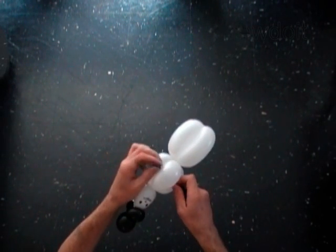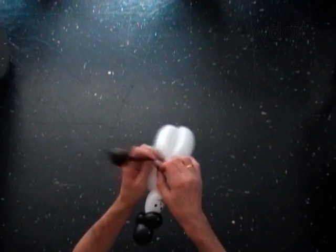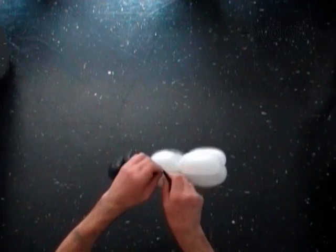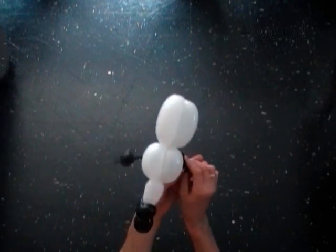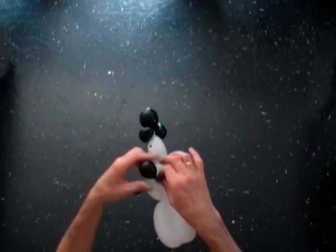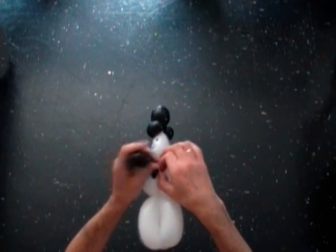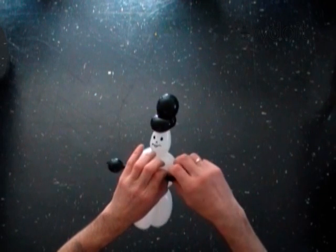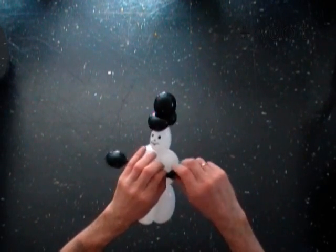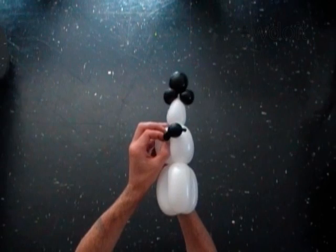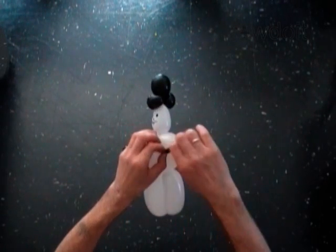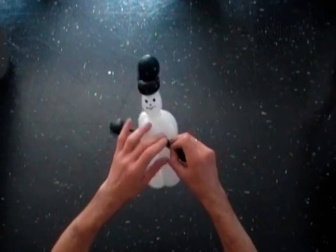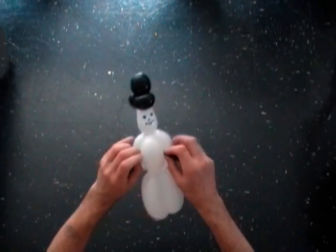Or you can tie a knot somewhere in the middle of the black balloon. Check the size of both black bubbles before you tighten the knot. Now you can hide the knot between white bubbles.